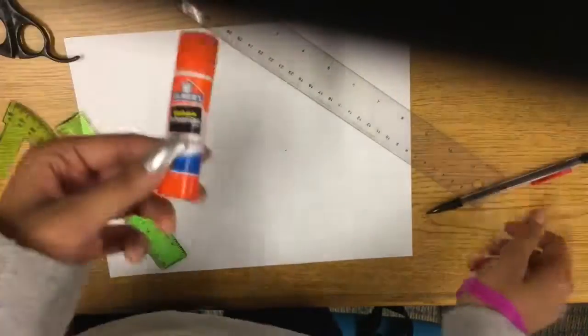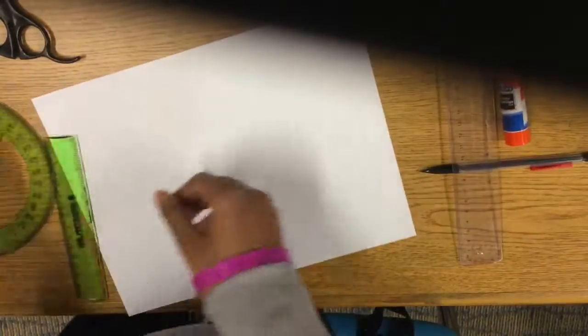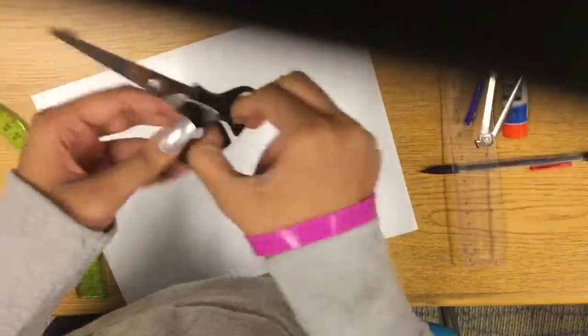Okay, what you need is some paper, a pencil, a glue stick, any type of straight edge, a really good working protractor, and some scissors.